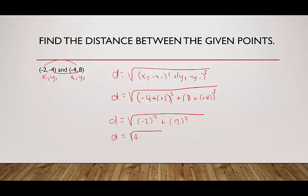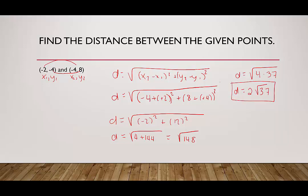In another example using just the distance formula, with points (−2, −4) and (−4, 8) labeled as (x₁, y₁) and (x₂, y₂): d = √[(−4 − (−2))² + (8 − (−4))²] = √[(−2)² + 12²] = √[4 + 144] = √148. Since 148 = 4 × 37 and 37 is prime, the largest perfect square factor is 4. So √148 = 2√37, which is the exact distance.